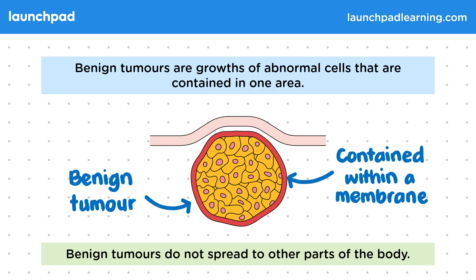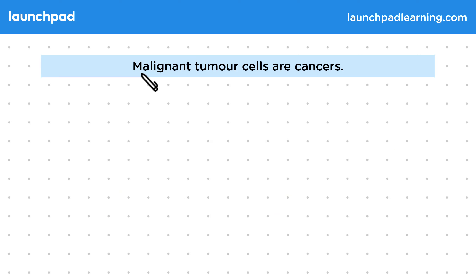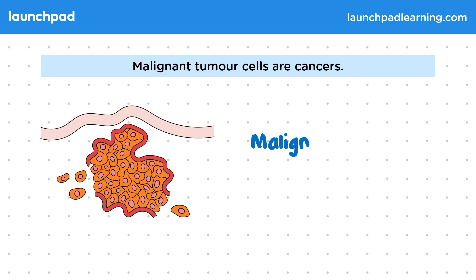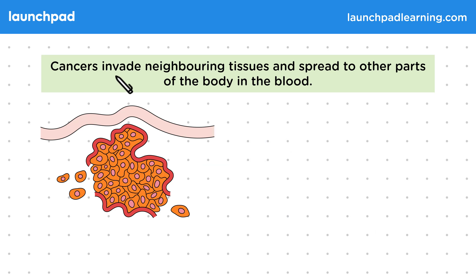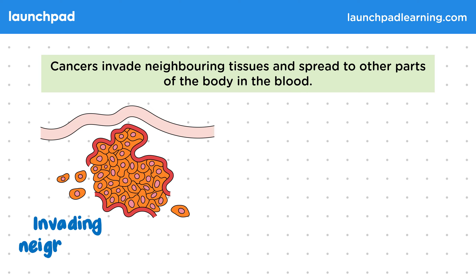So what is a cancerous tumour? Malignant tumour cells are cancers. This diagram shows what a malignant tumour would look like. You can see that the cells in this tumour are not contained as shown for the benign cells on the previous slide. So what happens when the malignant tumour cells aren't contained? Cancers invade neighbouring tissues and spread to other parts of the body in the blood. As the cancer cells are not contained, they have the ability to invade neighbouring tissues.